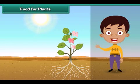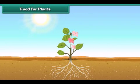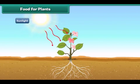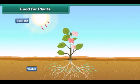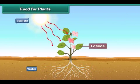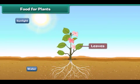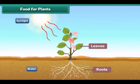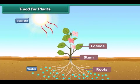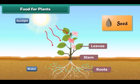Let us now understand where plants get their food. Plants make their own food with the help of sunlight. Plants take water from the soil and prepare food in their leaves. The plant uses some part of the food and the rest is stored in its roots, stem, leaves and seeds.